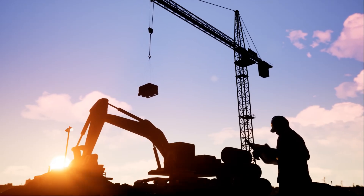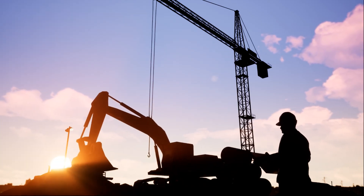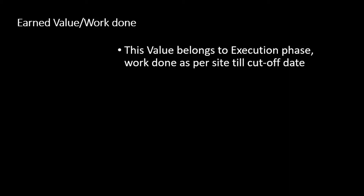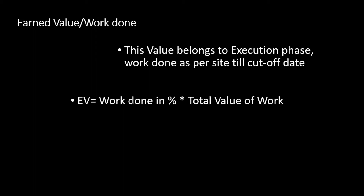The second terminology is Earned Value. Earned Value means the work actually done on site up to the cut-off date — in this case, 31st December. Planned Value belongs to the planning phase; Earned Value belongs to the execution phase. It represents work done as per site data up to the cut-off date, and all three parameters — Planned Value, Earned Value, and Actual Cost — must be calculated to the same cut-off date.